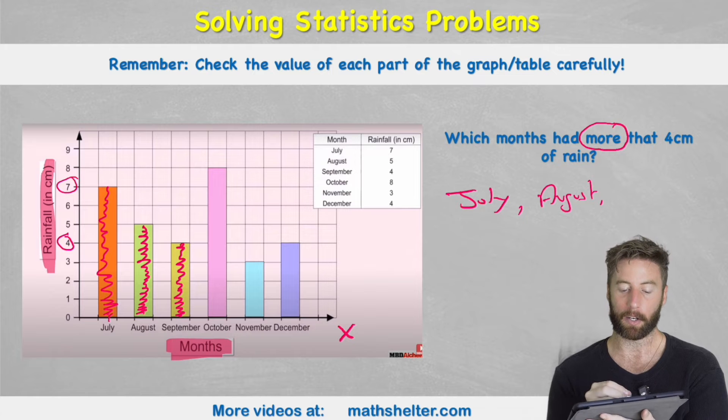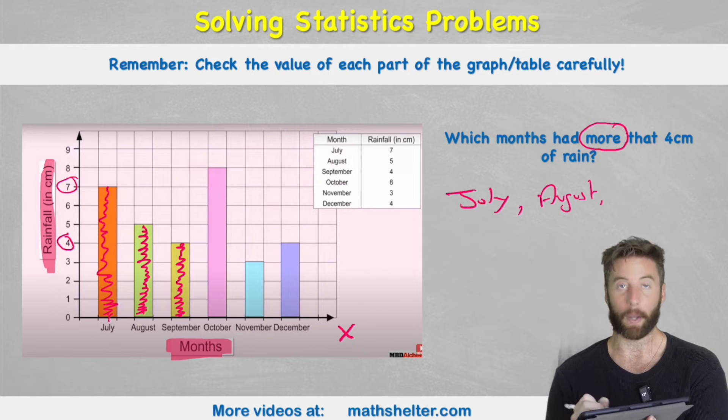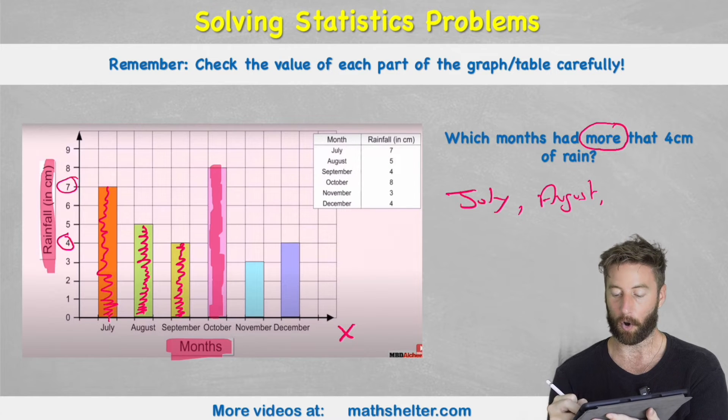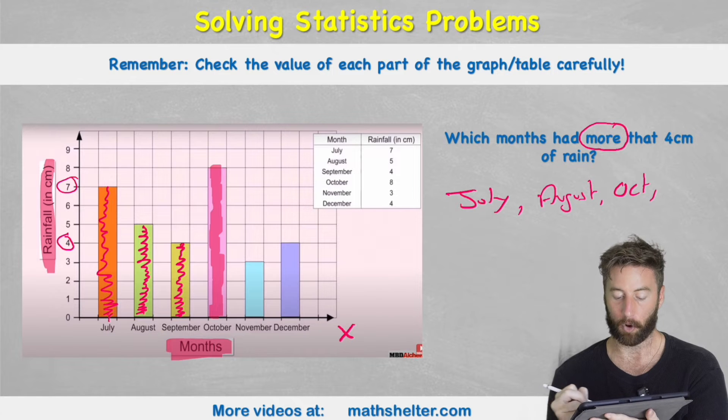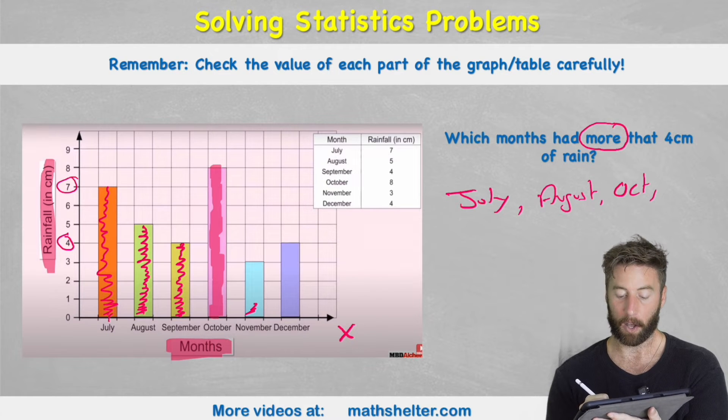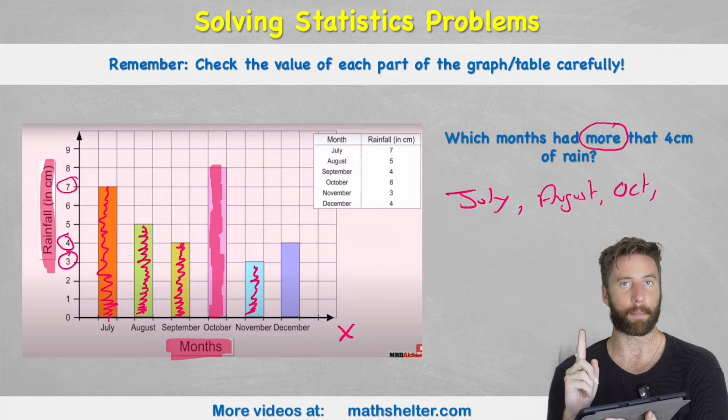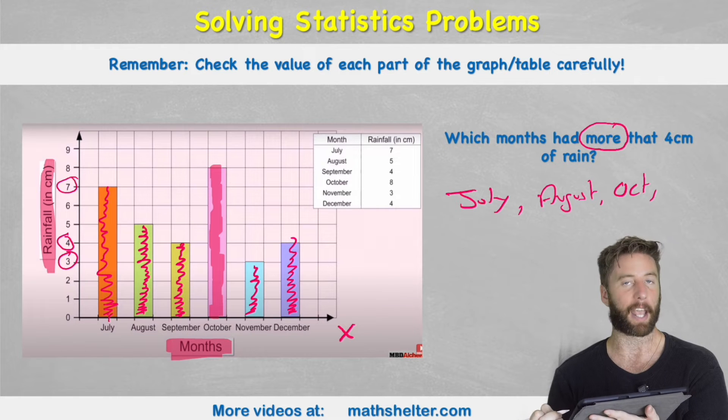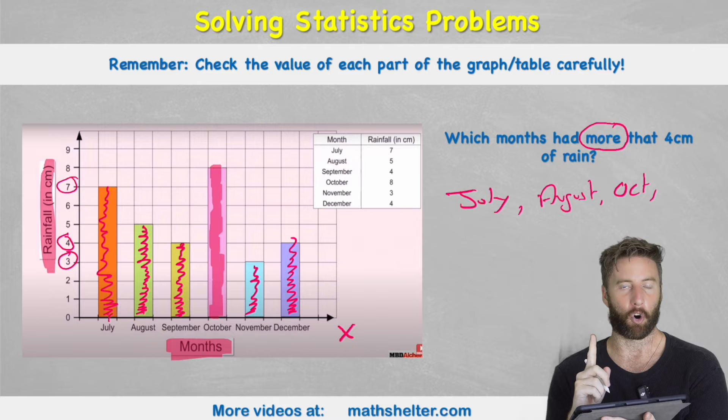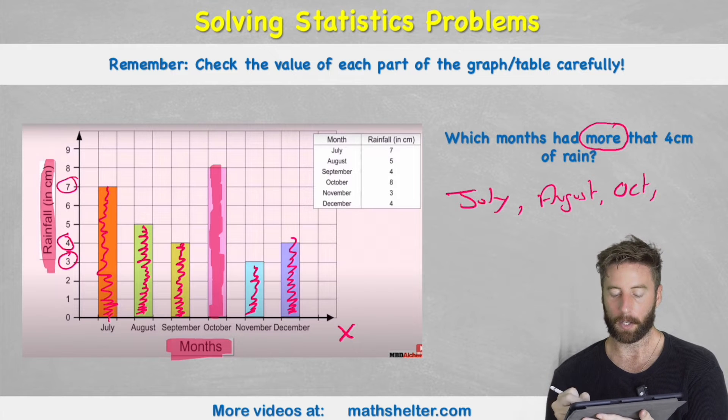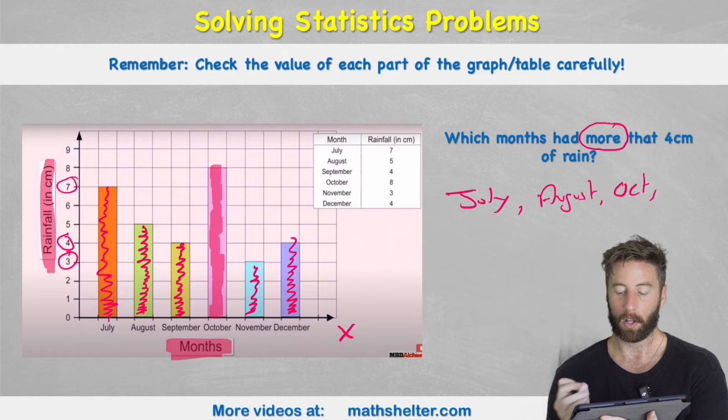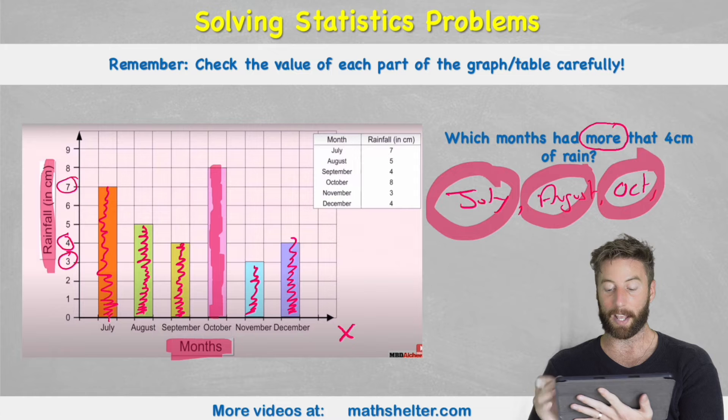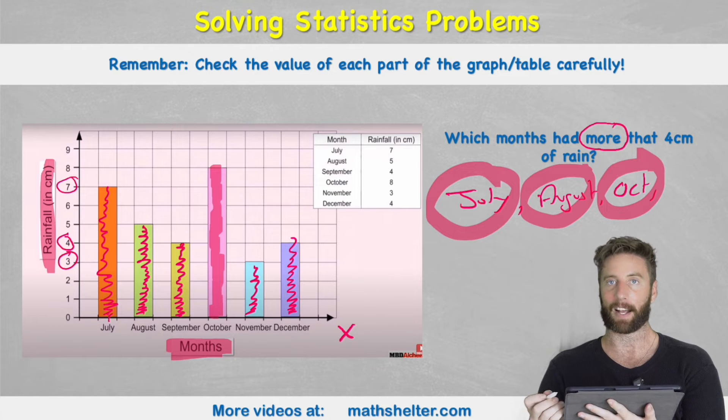So September does not count. What about October? Well we can see with this huge bar here that October goes all the way to eight. So therefore October also has more than four. November only goes to three, so November does not have more than four, and December goes to four again. So we know from last time if it has four it's not more than four. So the only three that have more than four are July, August and October. And we have just used the information in this graph to help us answer that question.